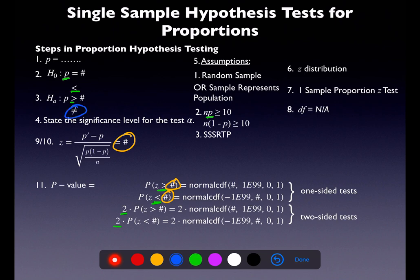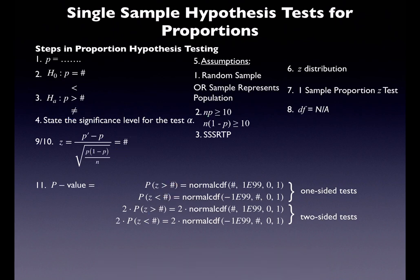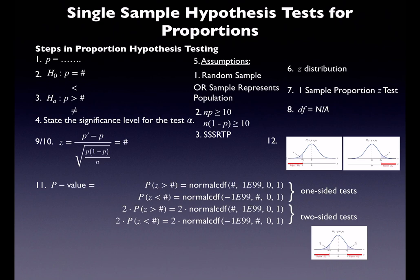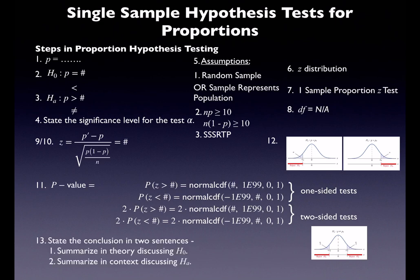If you have a not-equals-to test, the approach depends on your step 10 value. If it's positive, use a greater-than calculation and double it for symmetry. If it's negative, use a less-than calculation and double it for symmetry — because you're calculating the area of one tail and multiplying by two to get both tails. Then draw a picture, and state your conclusion with two sentences: one in theory — say whether you reject or fail to reject the null — and one in context, telling whether you have evidence for the alternate.